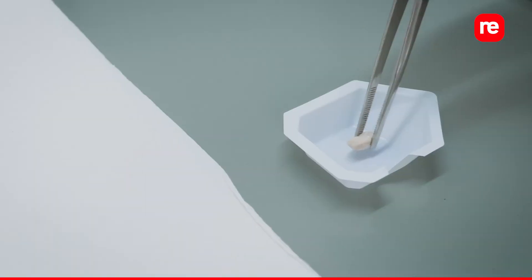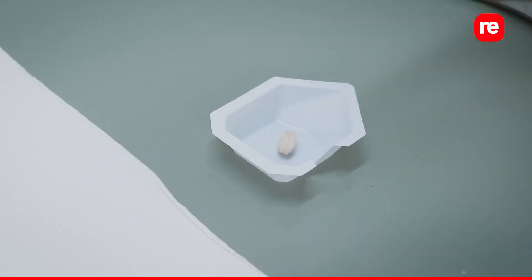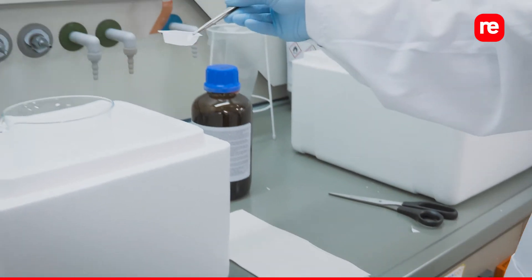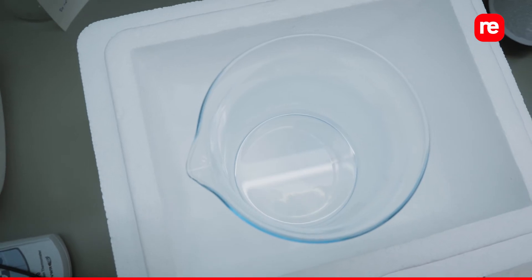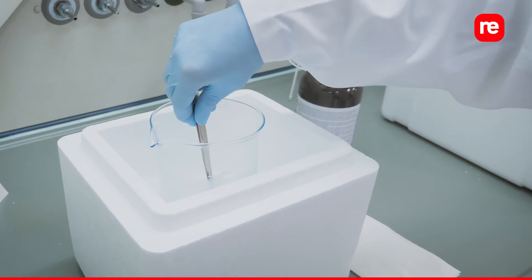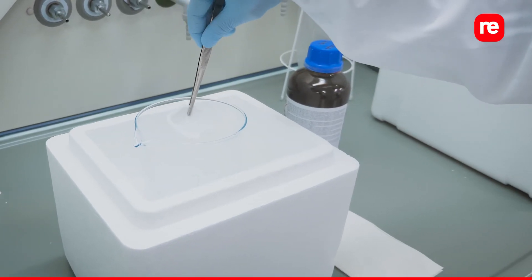Place the tissue on the tray and submerge it in the isopentane for about one minute. Retrieve the tissue and decant the isopentane from the tray.